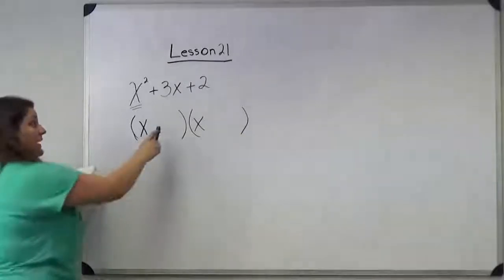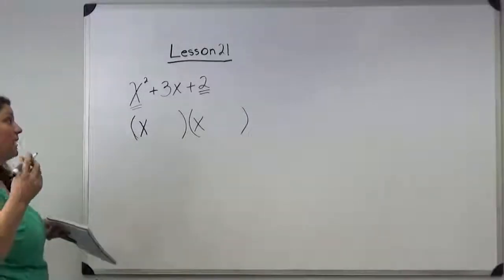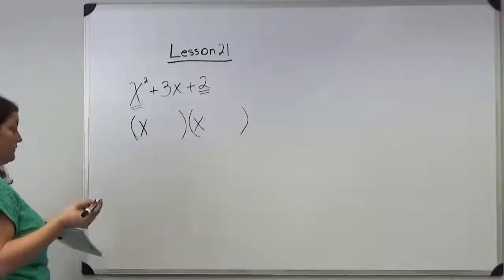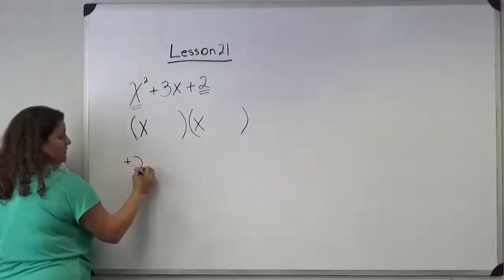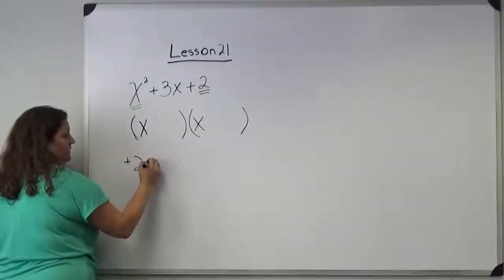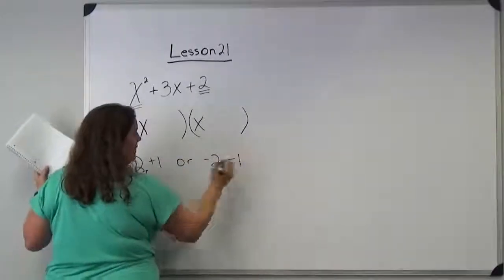Now to get the second term, you need to look at your last value and think about your factors, your possible factors of a positive 2. Your possible factors of a positive 2 are positive 2 and positive 1, or negative 2 and negative 1.